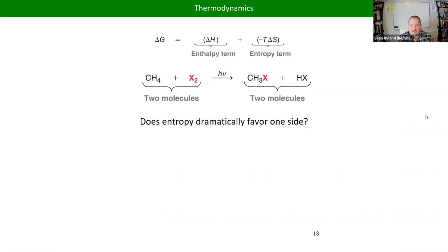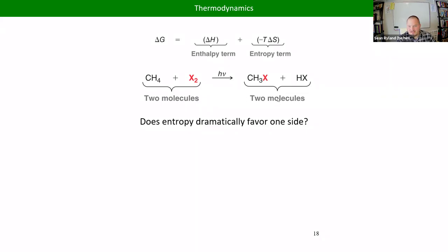When it comes to predicting how these reactions are going to play out, it winds up being based almost entirely on enthalpy. There's slightly more entropy in our products because we go from two kinds of bonds to three kinds — carbon-hydrogen, carbon-halide, hydrogen-halide — so it's slightly more random. But since entropy is mostly about how many gas molecules we have, and that didn't really change, we can basically forget about entropy for this reaction.